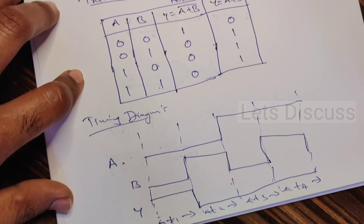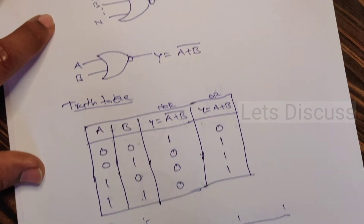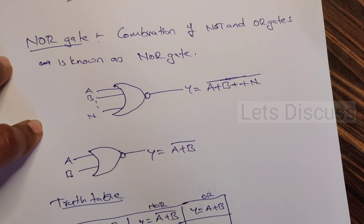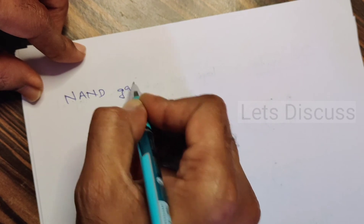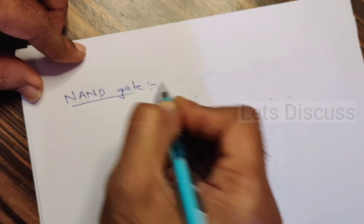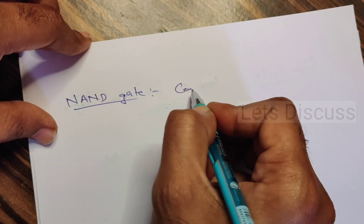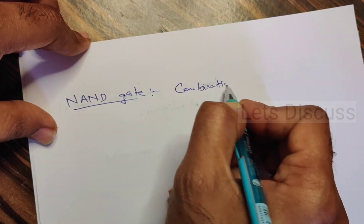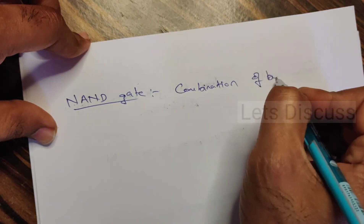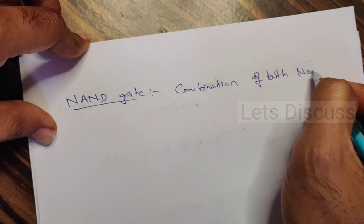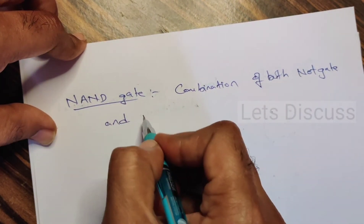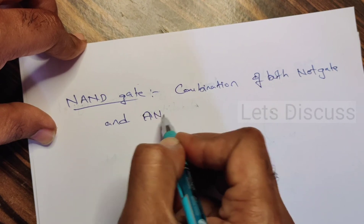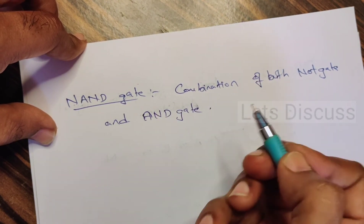This is all about NOR gate. Now let's discuss about NAND gate. NAND gate is a combination of both NOT gate and AND gate.